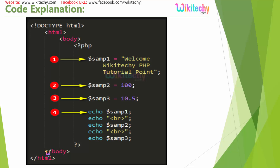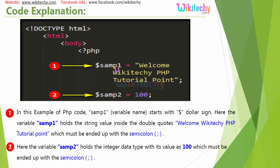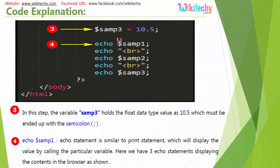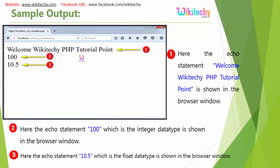This is a simple piece of code shown in a colorful format. SAMP1 holds a string value ending with a semicolon. SAMP2 is an integer value. SAMP3 is a float value, and they are all printed using the echo statement. The output shows the string, integer, and float values.